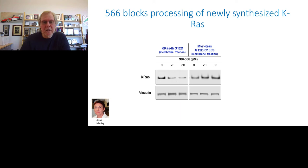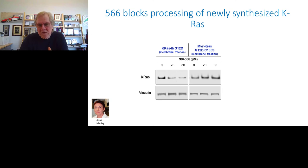We have found several classes of warhead and compound that covalently react with the cysteine and prevent farnesylation or geranylgeranylation of KRAS protein. In a cell line with wild-type KRAS, exposure to these compounds decreases the KRAS protein in the membrane. On the right panel, we see no effect on cells driven by a mutant form of KRAS that doesn't depend on farnesylation for its membrane localization. I want to acknowledge the work of Anna Maciag at the Frederick National Lab for developing these compounds.